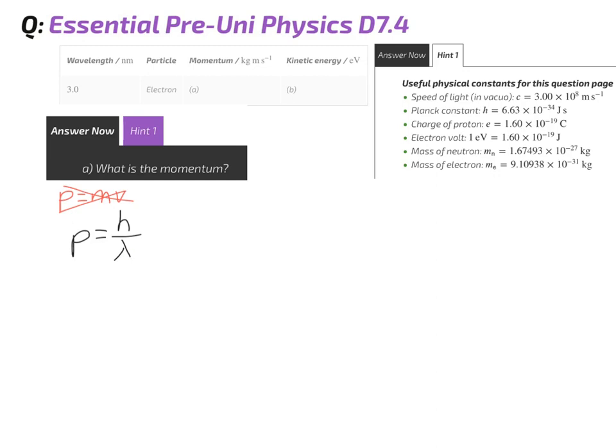By plugging my numbers in, I get Planck's constant, which is 6.63 times 10 to the minus 34, over the wavelength given to me in the question, which was 3 nanometers, so 3.0 times 10 to the minus 9 meters, which comes to be equal to 2.21 times 10 to the power of minus 25 kilogram meters per second.